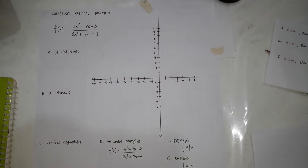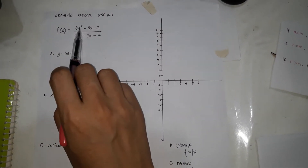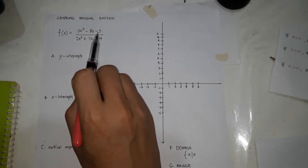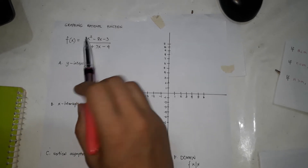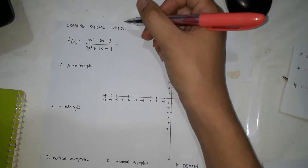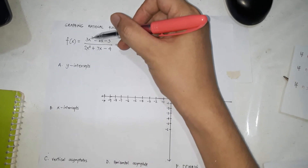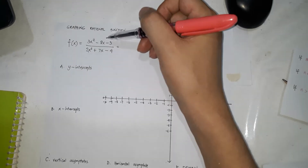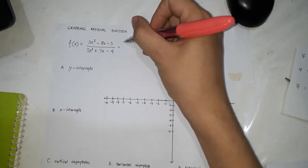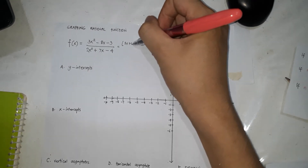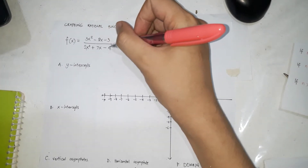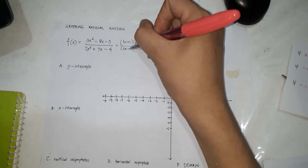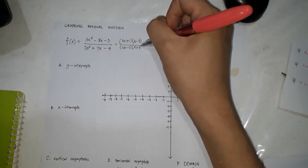Now we're going to graph a rational function. Our function is f(x) = (3x² - 8x - 3) / (2x² + 7x - 4). Given this, we can first simplify. Since there are x² terms and trinomials (three terms), the best way is to factor. The numerator factors as (3x + 1)(x - 3), and the denominator 2x² + 7x - 4 factors as (2x - 1)(x + 4), to make it easier to solve.